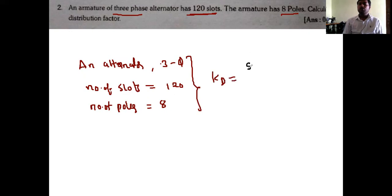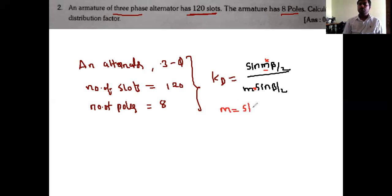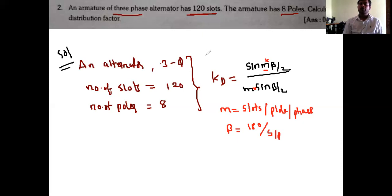The formula for kd is equal to sin(m·beta/2) divided by m·sin(beta/2). Here m·beta represents the vector sum and m·sin(angle) represents the arithmetic sum. The value of m is the number of slots per pole per phase, and beta is equal to 180 divided by the number of slots per pole.